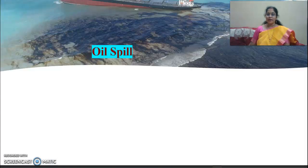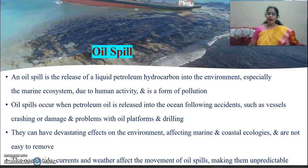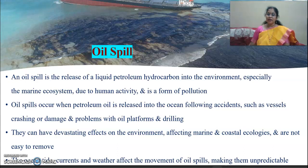An oil spill is the release of liquid petroleum hydrocarbon into the environment, especially into the marine ecosystem, due to human activity or as a form of pollution. Oil spills occur when petroleum oil is released into the ocean following accidents such as vessel crashing or damage, or problems with oil platforms or drilling. They can have devastating effects on marine and coastal ecologies and are not easy to clean up, as ocean tides, currents, and weather affect the movement of oil spills, making them unpredictable.